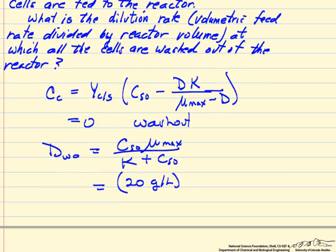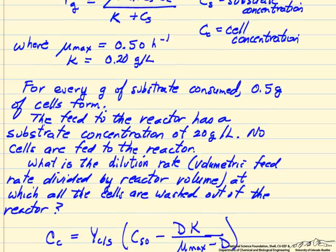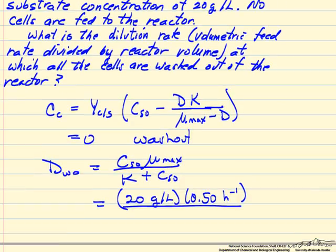The rate constant μmax is 0.5 inverse hours, and the other constant K in the rate expression is 0.20 grams per liter. And then CSO is 20 grams per liter again.